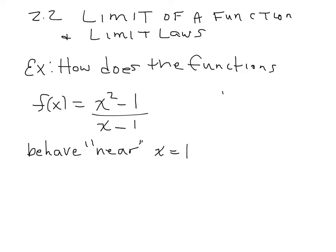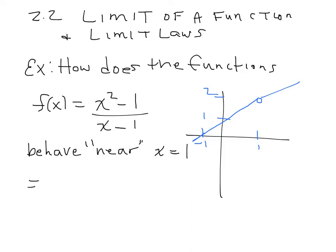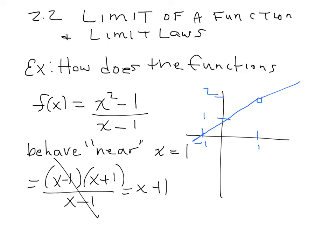So if you graph this, it's kind of weird. When you actually graph it, it looks like just a line. Why? Look at the top — you remember something from algebra? Difference of squares. So if I factor that into (x-1)(x+1) over (x-1), that cancels. That's simply the graph of a line, x plus 1, except I cannot plug in 1 because if I plug in 1, I'm dividing by zero.